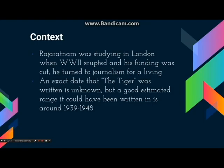During that time, Rajaratnam was in his early 20s, studying law in King's College, London. When WWII erupted, his family could not send him money for his education. As such, Rajaratnam decided to start being a journalist to fund his own education, and thus began to write short stories. The Tiger was one of them. Rajaratnam wrote this story during a time when racial discrimination was still prevalent in the world.